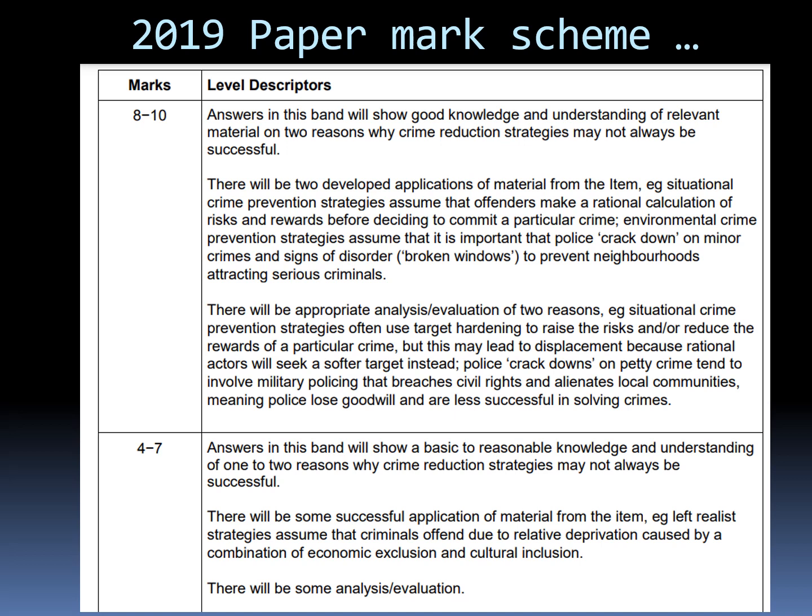For hook number one — assumptions about how and why people might offend — this could be assuming that criminals are rational, which links into right realist and situational crime prevention, and then you need to write about why it's problematic. Or you could use that same hook to link to left realism: the assumption that people commit crime due to being relatively deprived, marginalised, or joining subcultures. Hook number two — assumptions about what crimes it is important to reduce — might focus on right realist environmental crime prevention and why that's problematic, as it tends to focus on minor incivilities to prevent more serious crime. Hook number three — the assumption about the role of the police — could suggest the police should be tough on crime, which is another right realist approach.